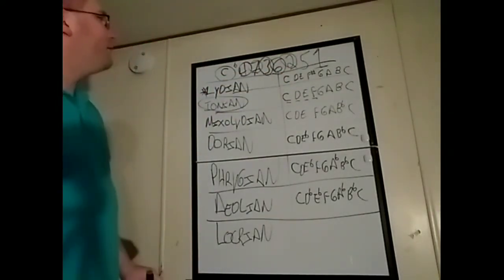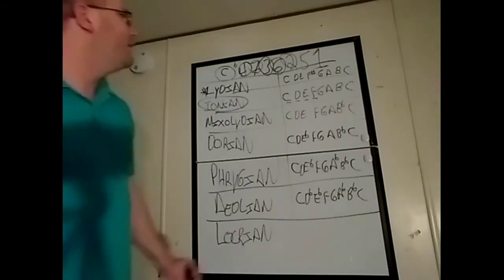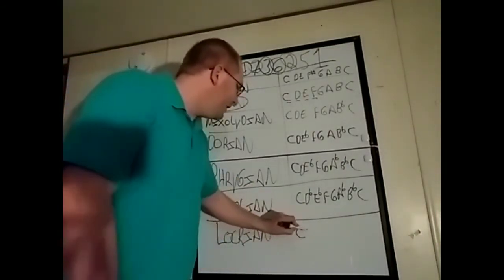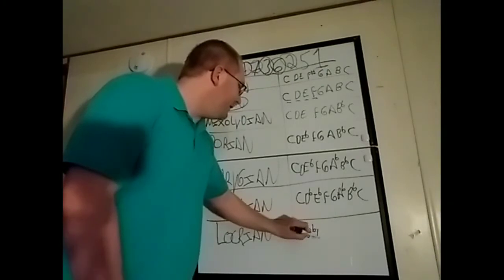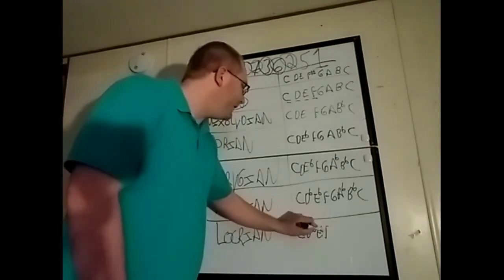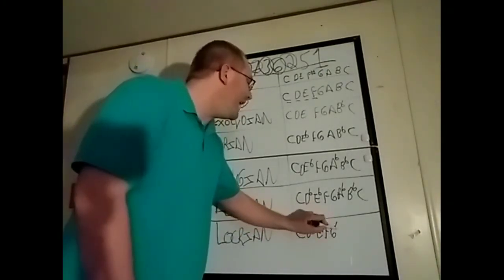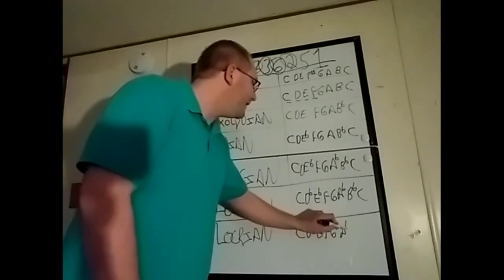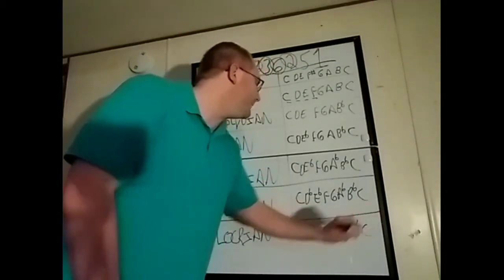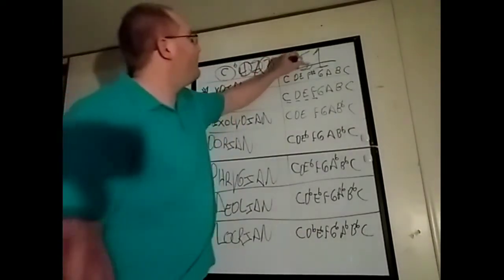Now, we have Locrian. It says we need to flat the 5. So, C, D flat, E flat, F, G flat, A flat, B flat, C. That takes care of the 5.